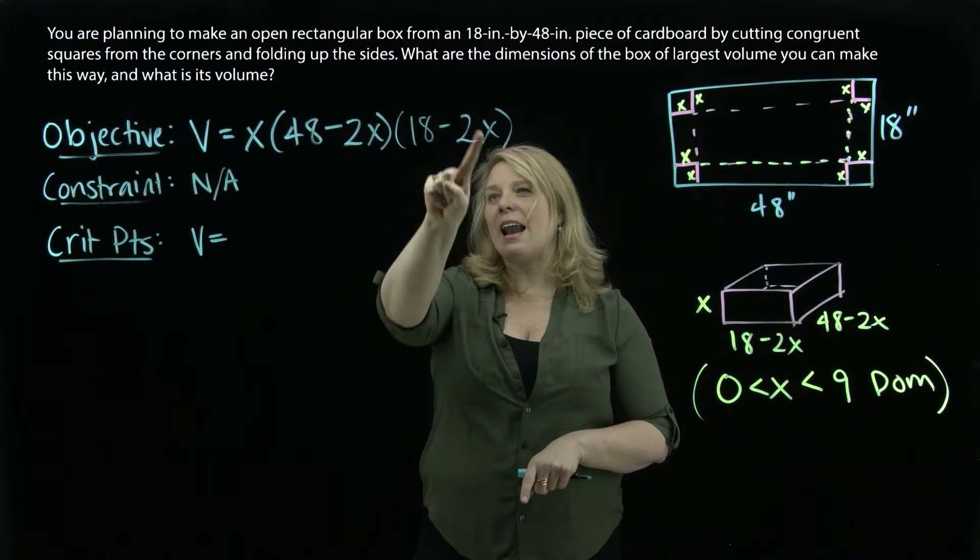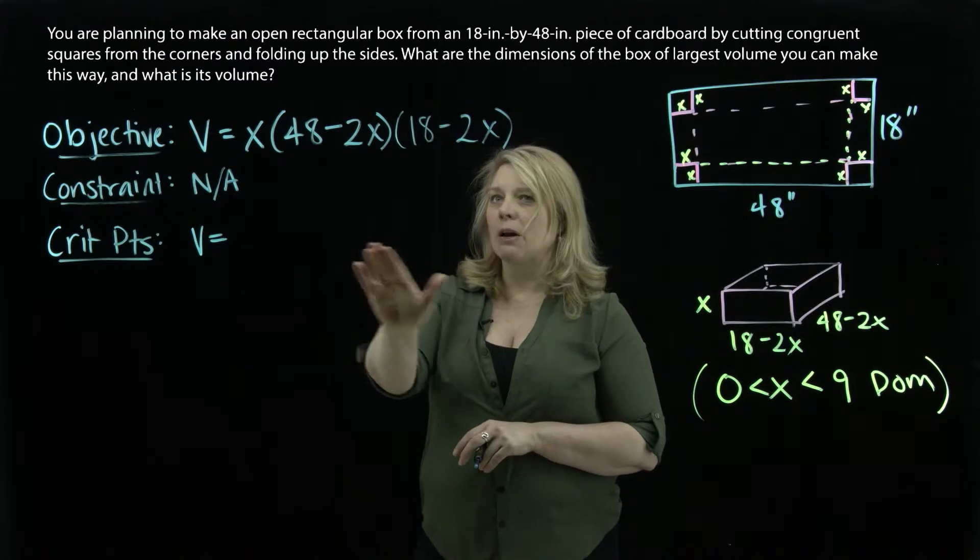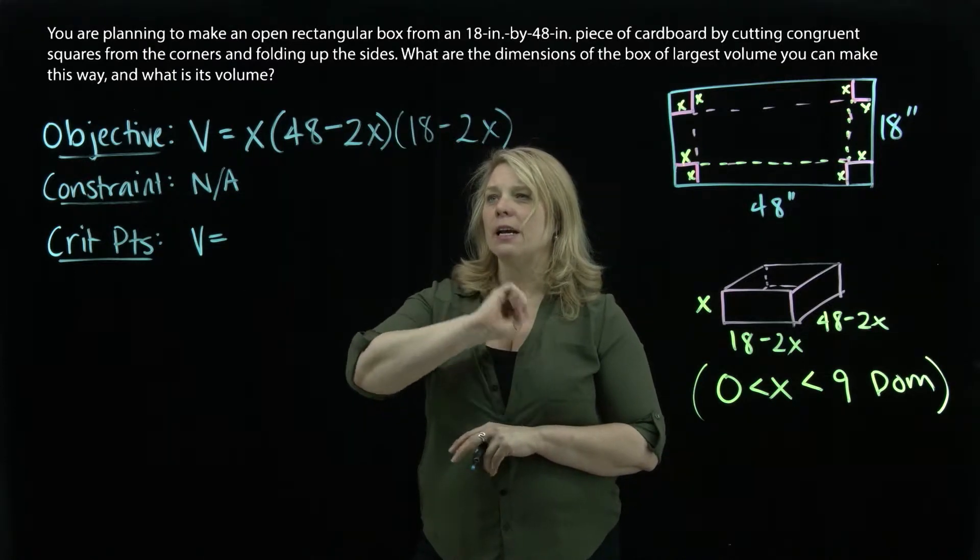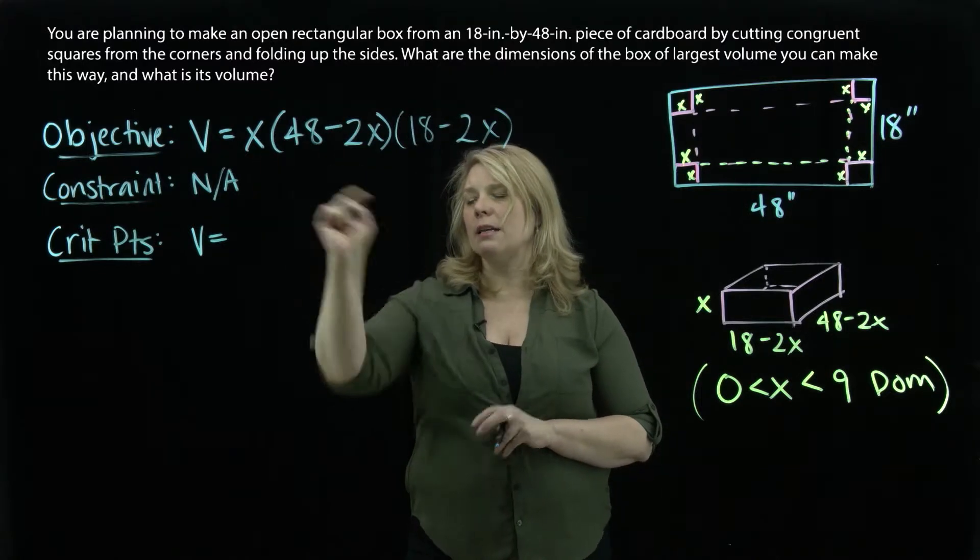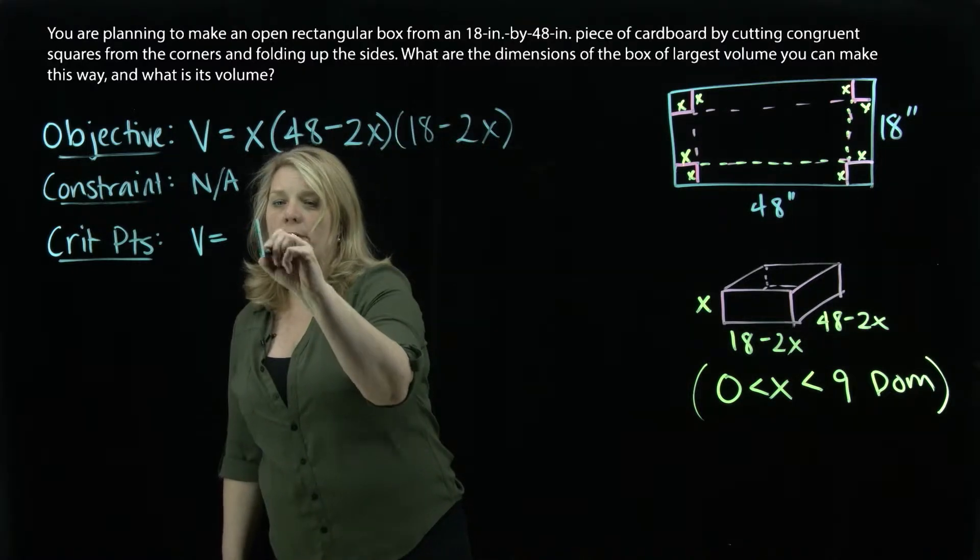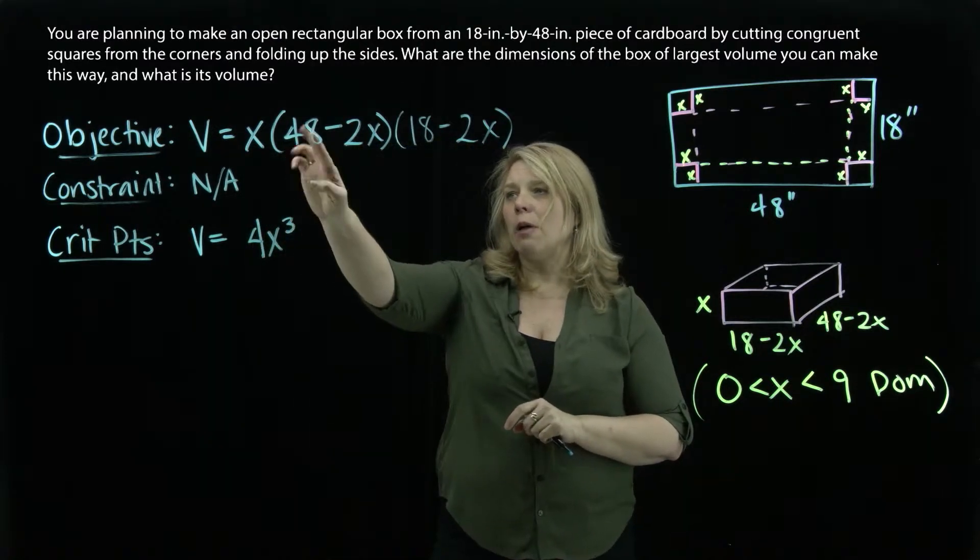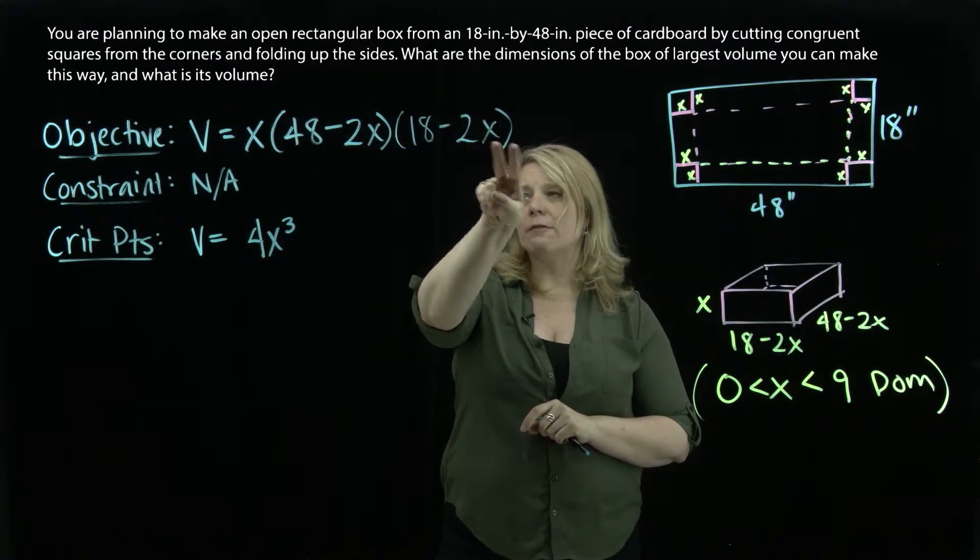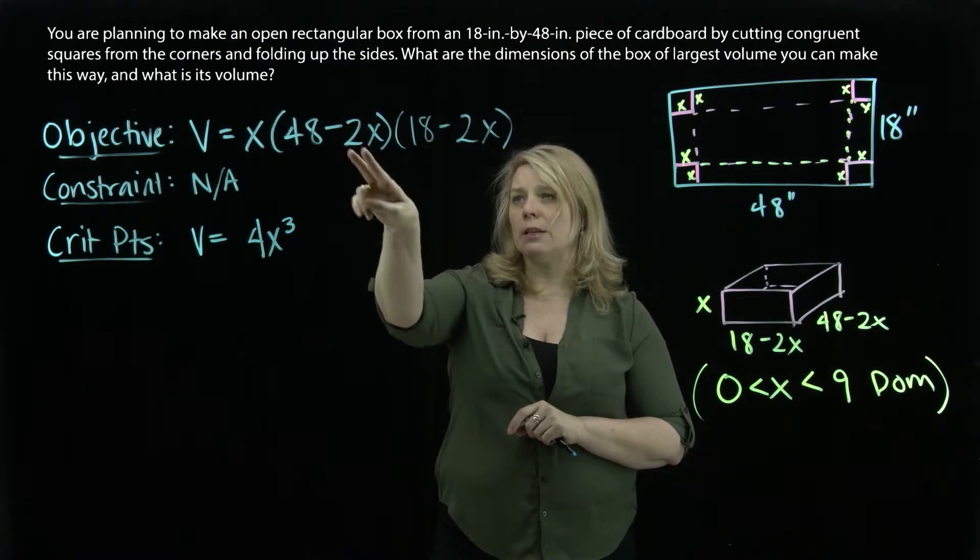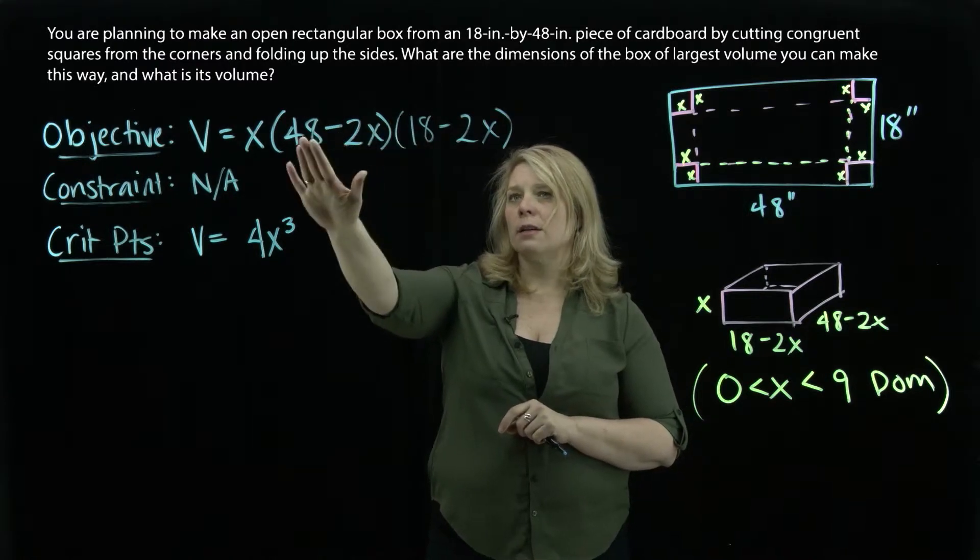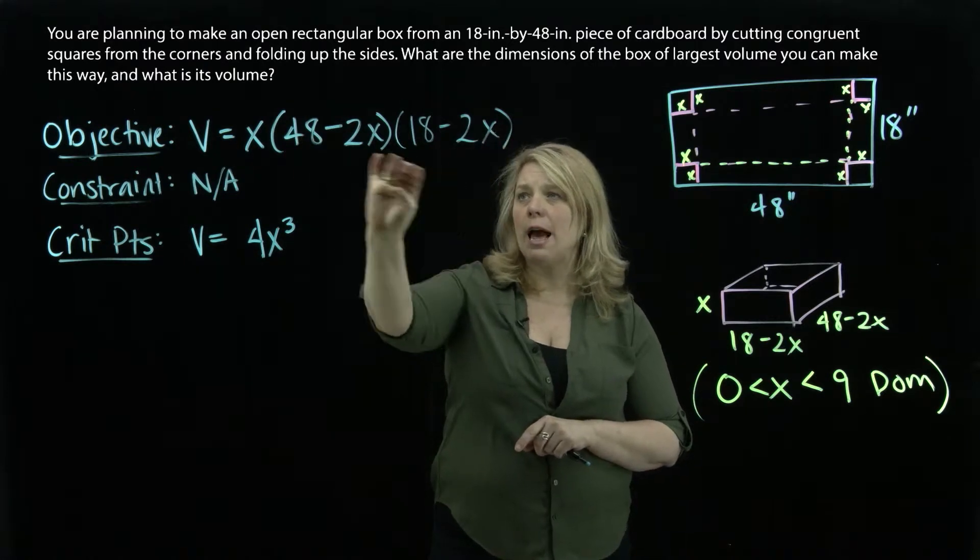We're going to foil that out and then distribute through an x. We'll have some like terms we can combine. I'm going to write this simplified version down here. We'll have a minus 2x times a minus 2x. It'll be a 4x squared and then times the other x here. So we'll have a 4x cubed for the highest power term. We'll have a 48 times the negative 2x, so negative 96x, and then a negative 2x times 18, so negative 36x. So a negative 96 plus a negative 36x will be negative 132x, the middle term there.